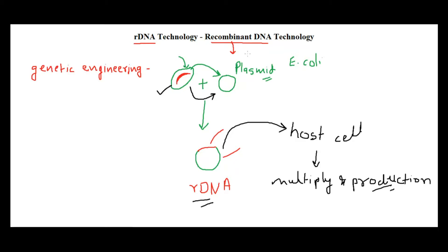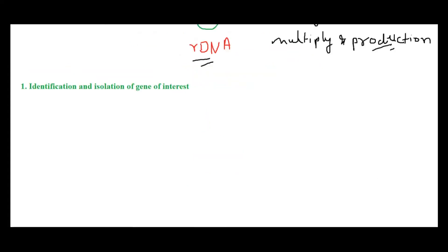Now let's see the overview and all the steps involved in recombinant DNA technology. Recombinant DNA technology starts with the identification and isolation of the gene of interest. For example, we spoke about human insulin — you know what product you're looking for, so you first isolate that particular gene of interest.